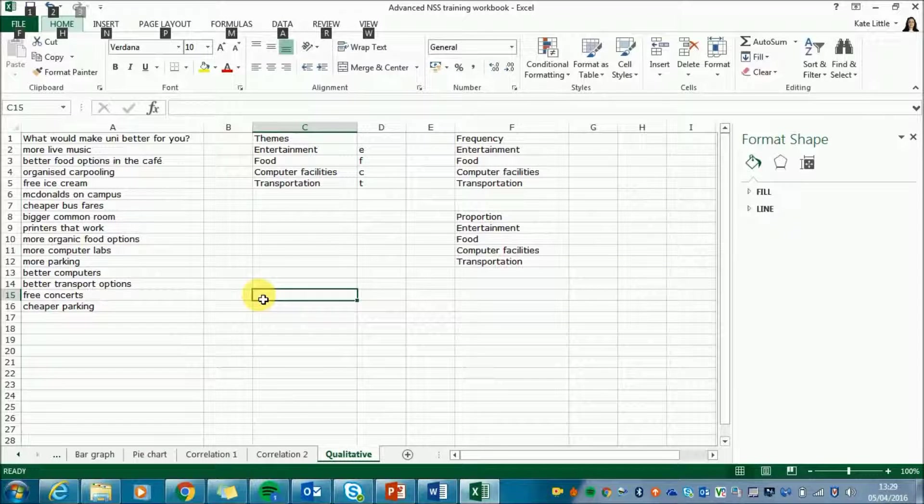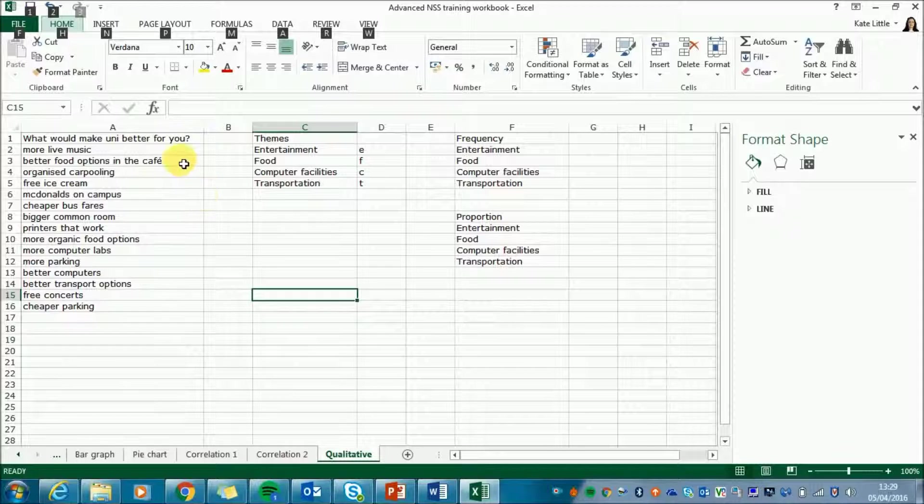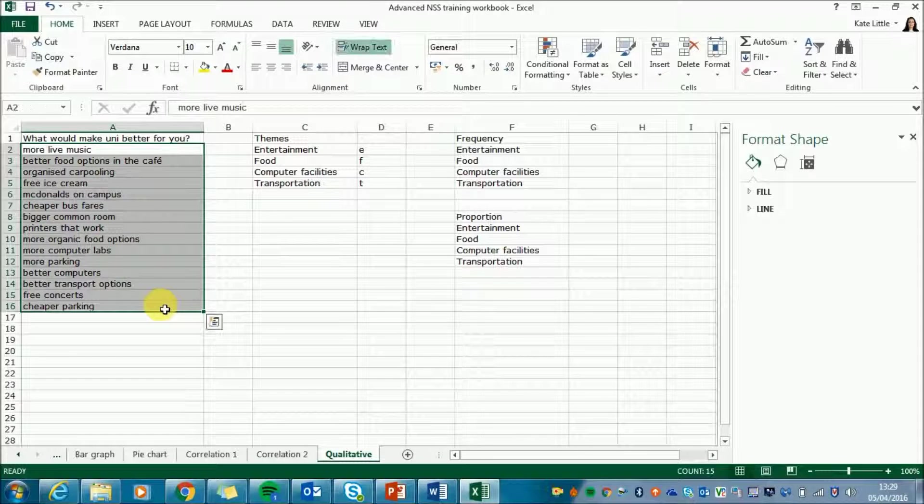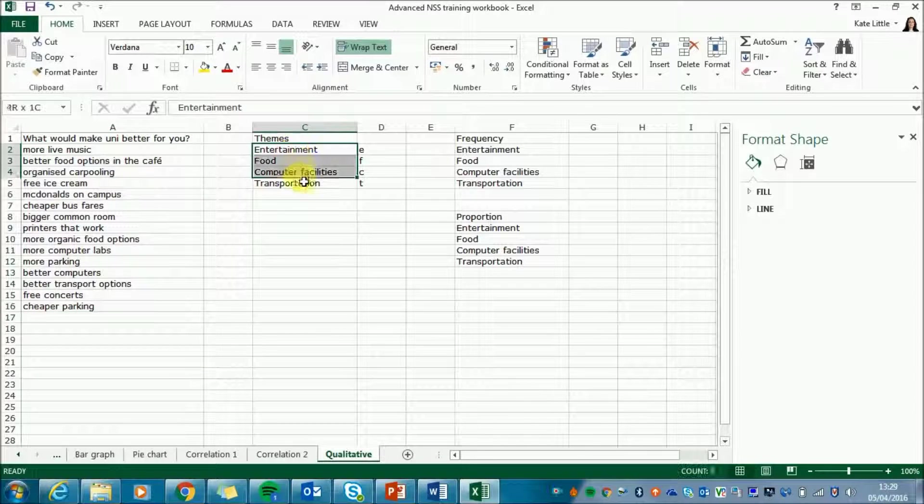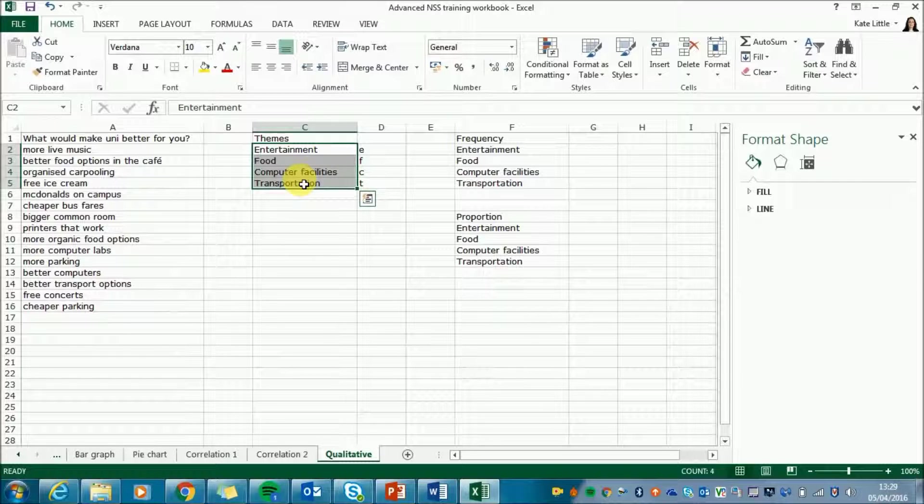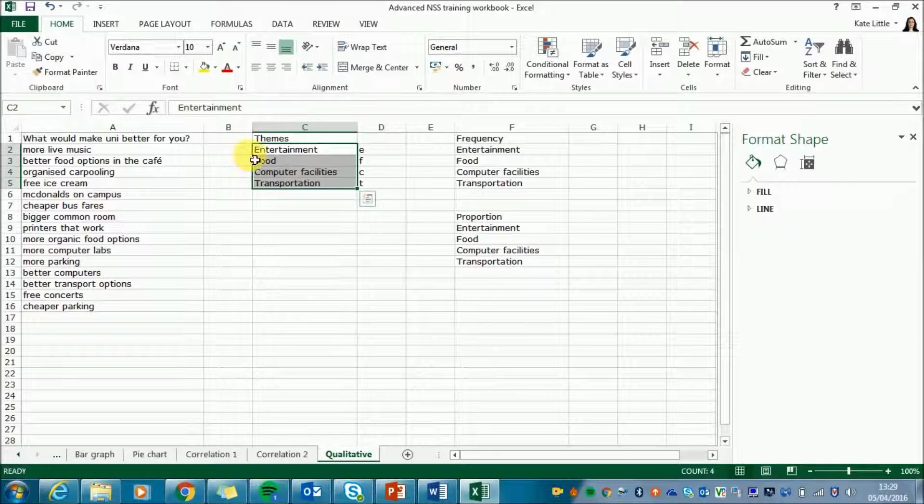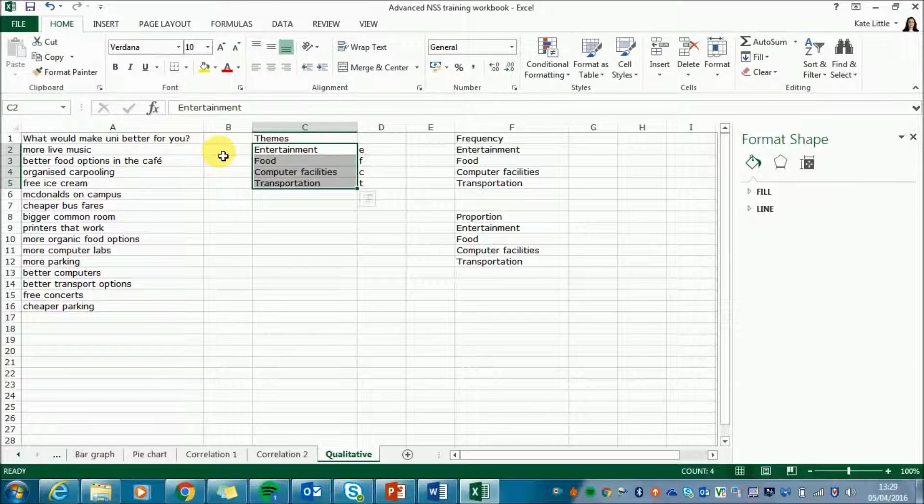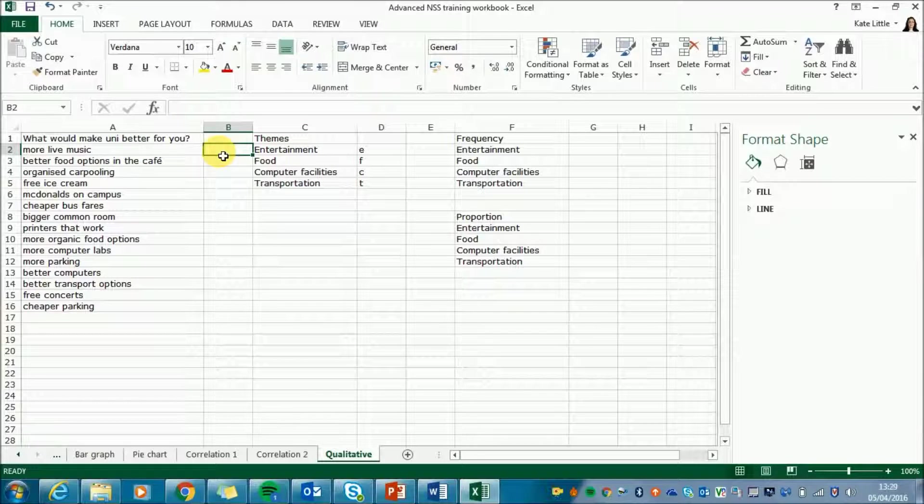Ok so first thing we're going to do is we're going to code all our answers. So we've got students answers over here and we've got four pre-existing themes entertainment, food, computer facilities and transportation. The first thing to do is assign a code to each of the comments that classifies it under a theme. So I'll do that now.